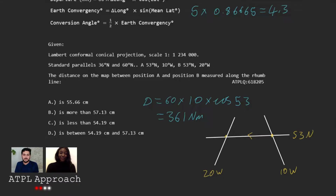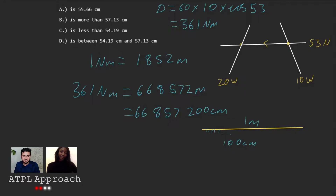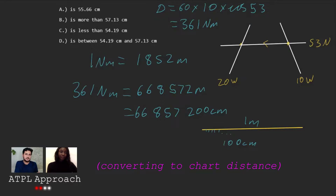But then we've got to change our unit as well. Two zero zero centimetres — there we go. I guess you should write it backwards. That's how many centimetres it is — 66 million, okay? Same as 361 nautical miles. So we're in the right unit now. We know 361 nautical miles is that many centimetres.